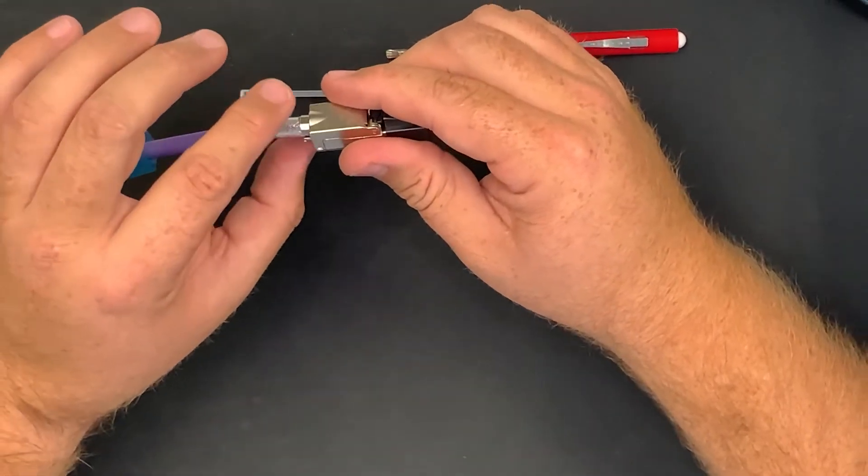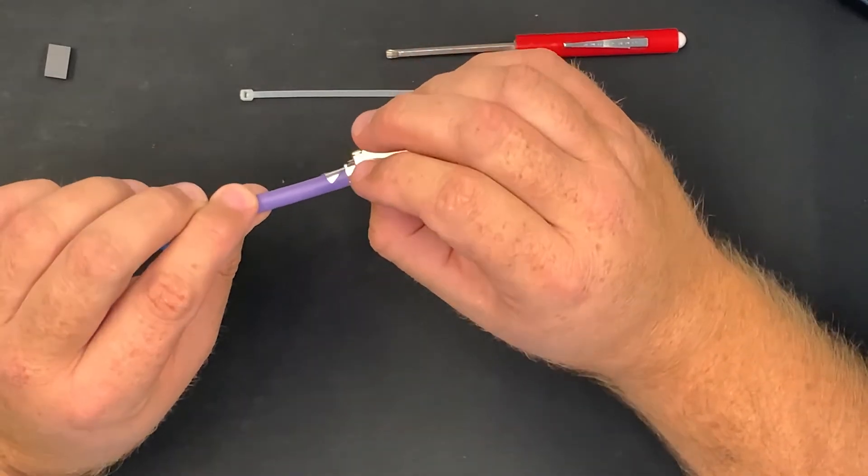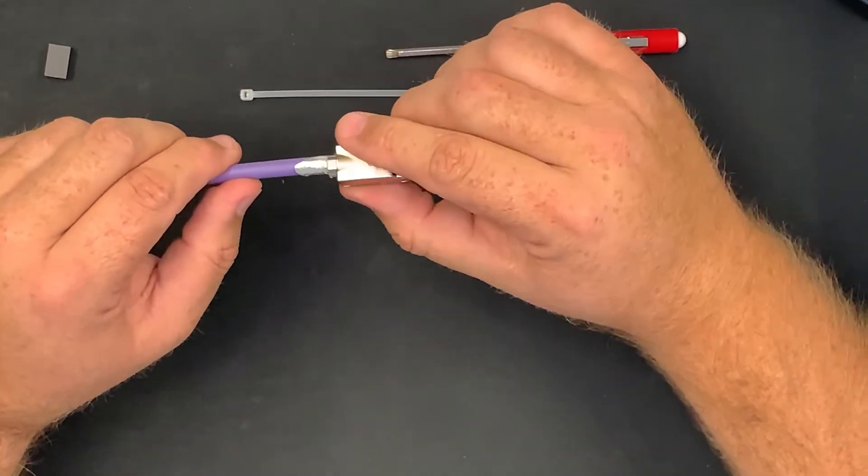Now, you will see at the back, the clip here has touched your shield and the drain wire. And that completes your shield.